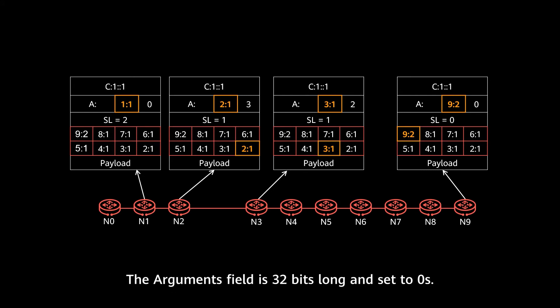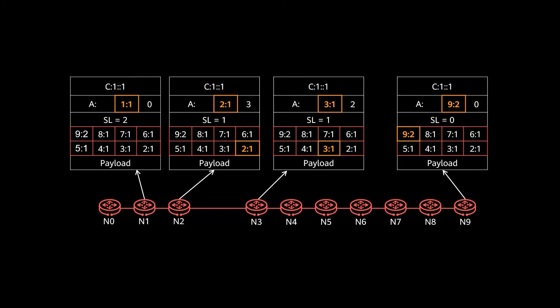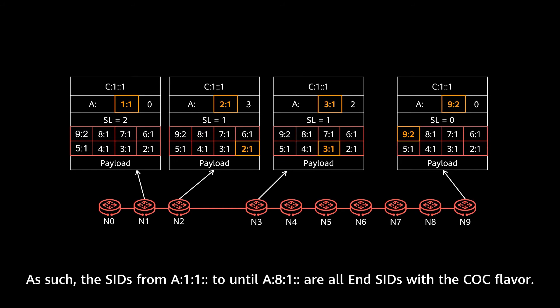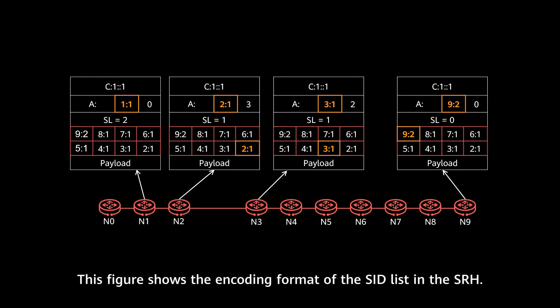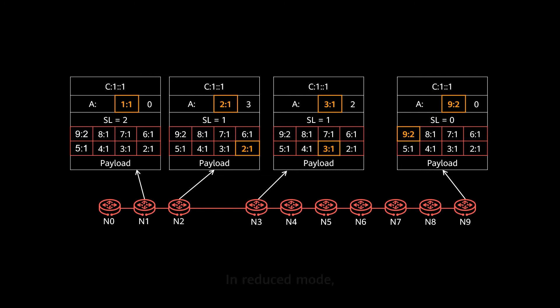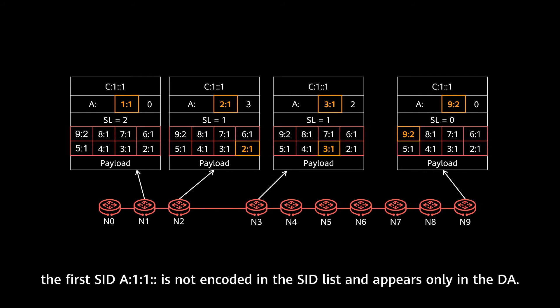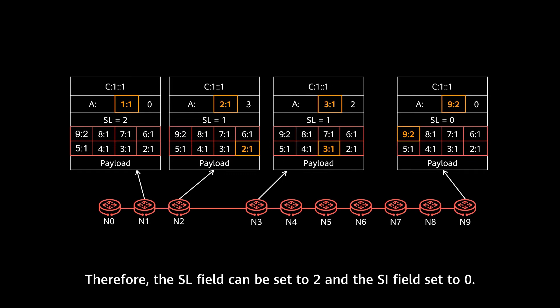So the argument field is 32-bit long and all set to zero. As such, the SIDs from 8::1:1:: to 8::8:1:: are all End SIDs with COC flavors, and 8::9:2 is the normal SRV6 End SID without the COC flavor. This figure shows the encoding format of the COC in the SRH. In reduced mode, the first SID, 8::1:1, is not encoded in the SRH and will appear only in the DA. Therefore, the SL field is set to 2, and the SI field is set to 0.